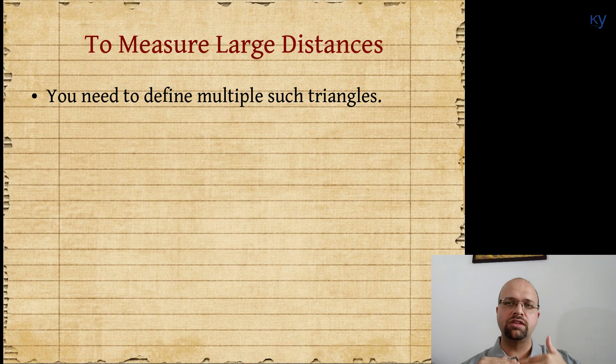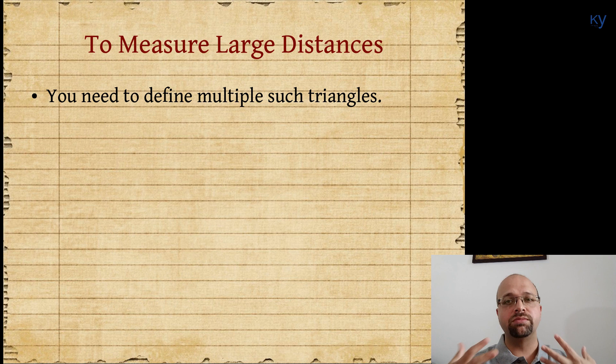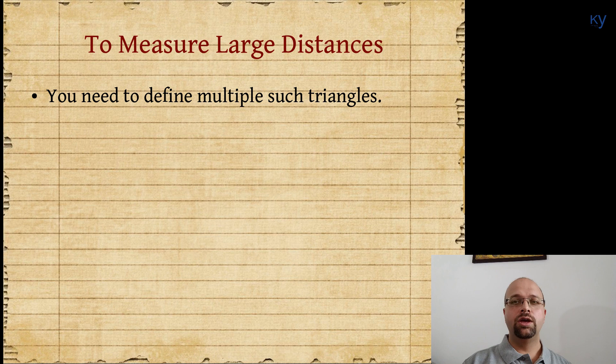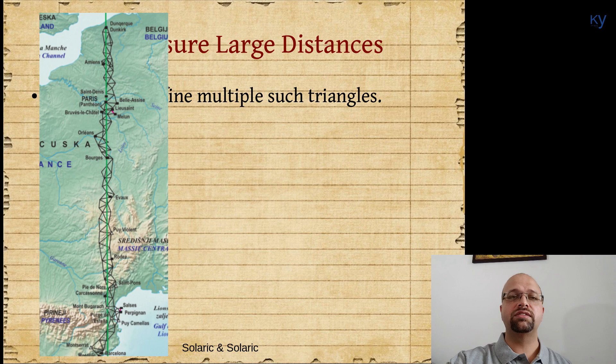Now remember, depending on how small the angle you can measure, there is only a certain distance up to which you can measure using triangulation. If you want to measure a very large distance, like what was needed for the measurement of a quadrant or a part of the quadrant, you need to construct multiple triangles. You need to find two points, construct a triangle, measure the distance, go to the next point, find another point, create a system of triangles and then move forward.